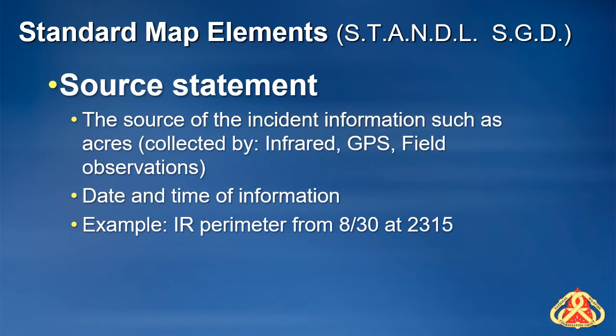The source statement provides citations for data and features on a map, such as its source, accuracy, coordinate system or projection, collection method, or any number of other items. Include, when applicable, the date and time the key elements of the mapped area were collected. It may be embedded in the legend or in the title box. Infrared interpretation data is identified by the time of the flight.